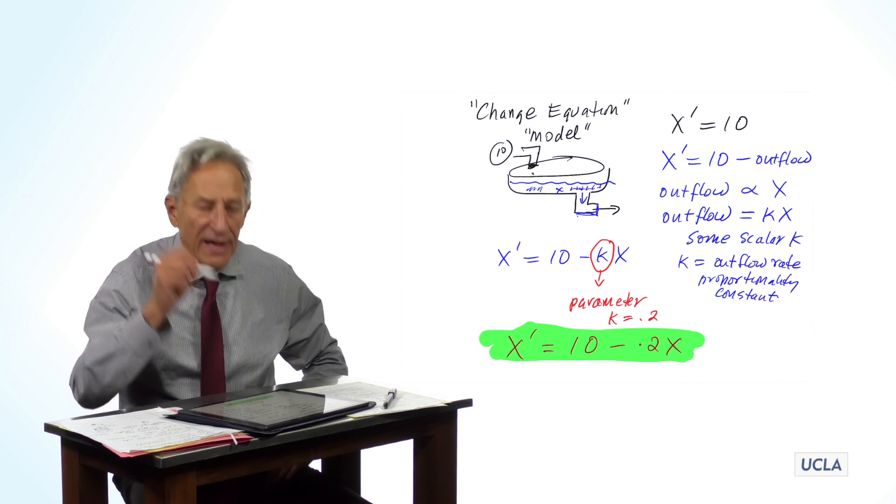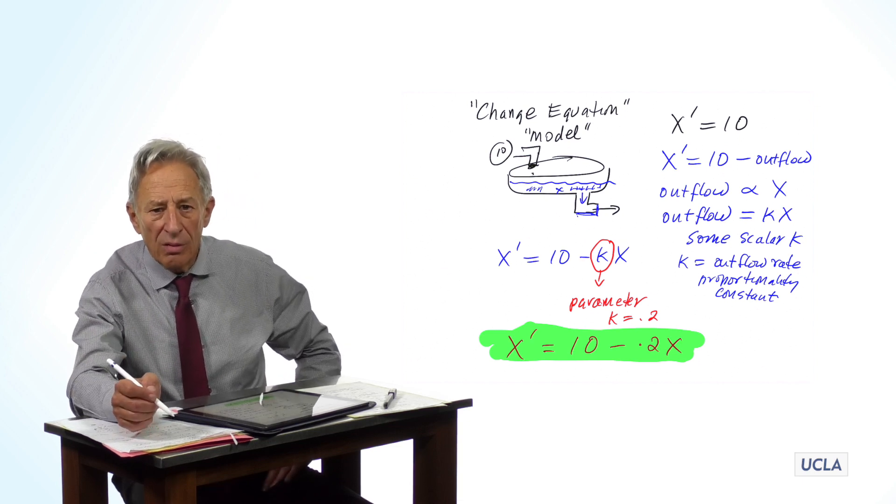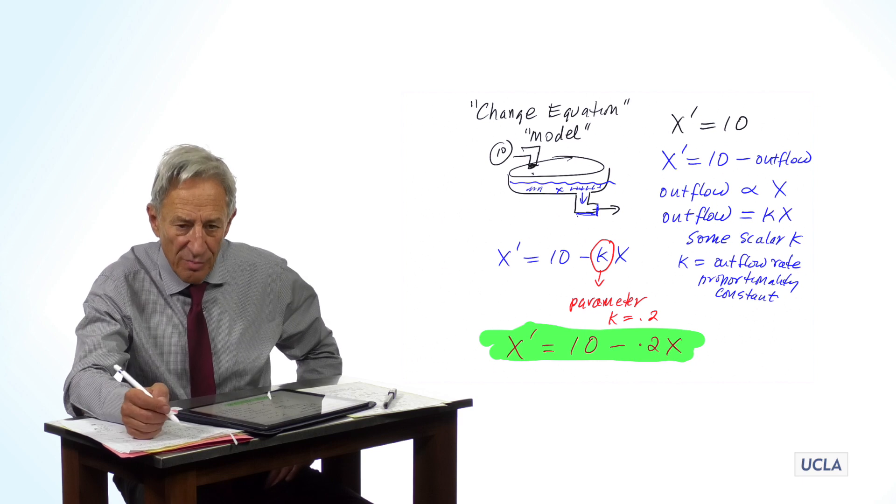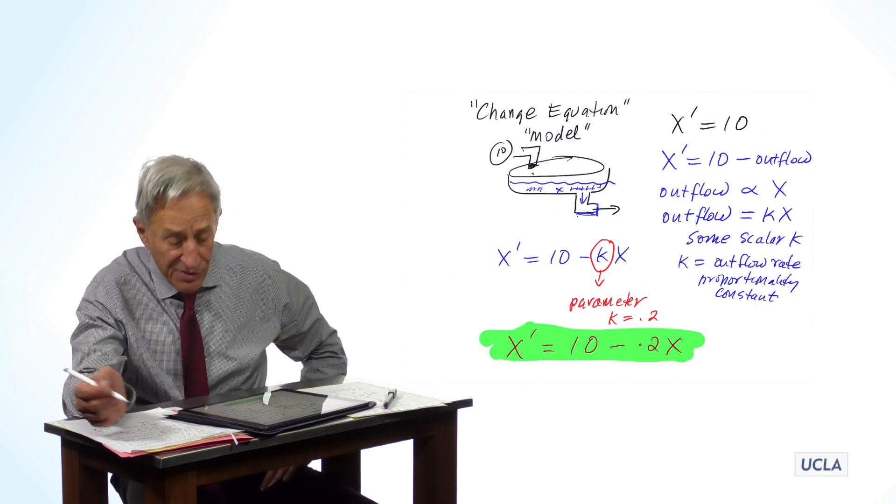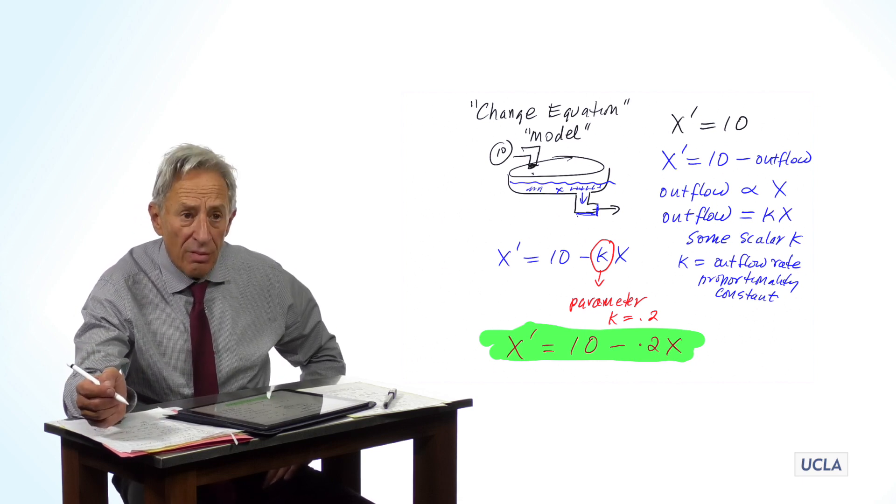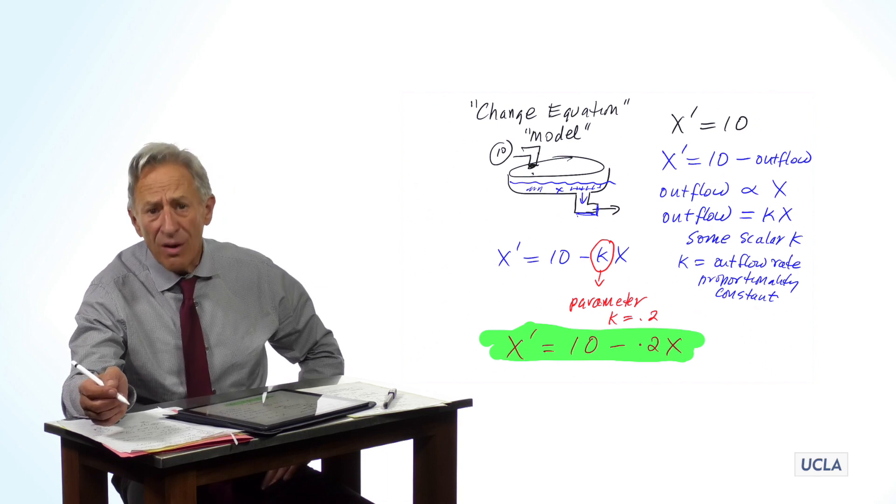So this is how we make a model. We write down our parameters, and we write down our state variables, and then we just ask what makes them go up and what makes them go down.